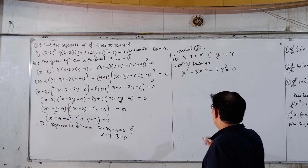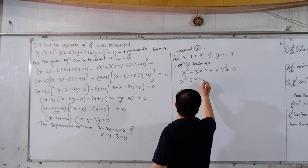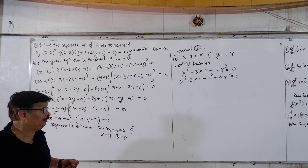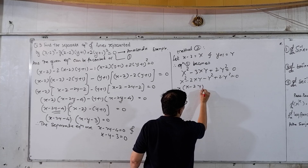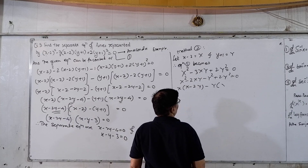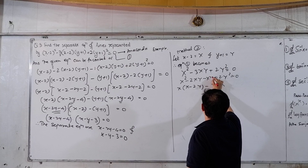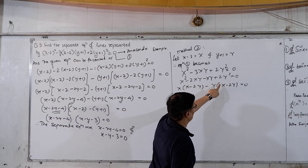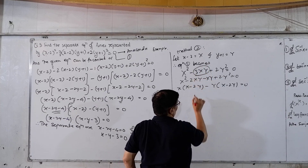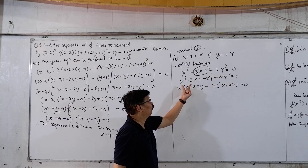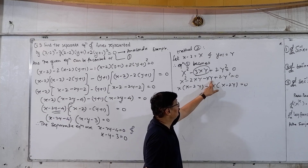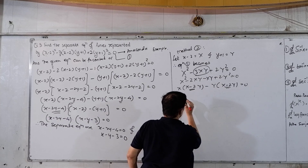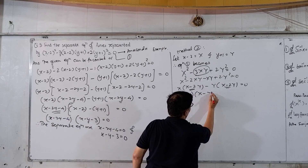Now we can factor it: X squared minus 2XY minus XY plus 2Y squared equal to 0. Take X common from the first two terms and minus Y from the last two: X(X minus 2Y) minus Y(X minus 2Y) equal to 0. So (X minus 2Y)(X minus Y) equal to 0.